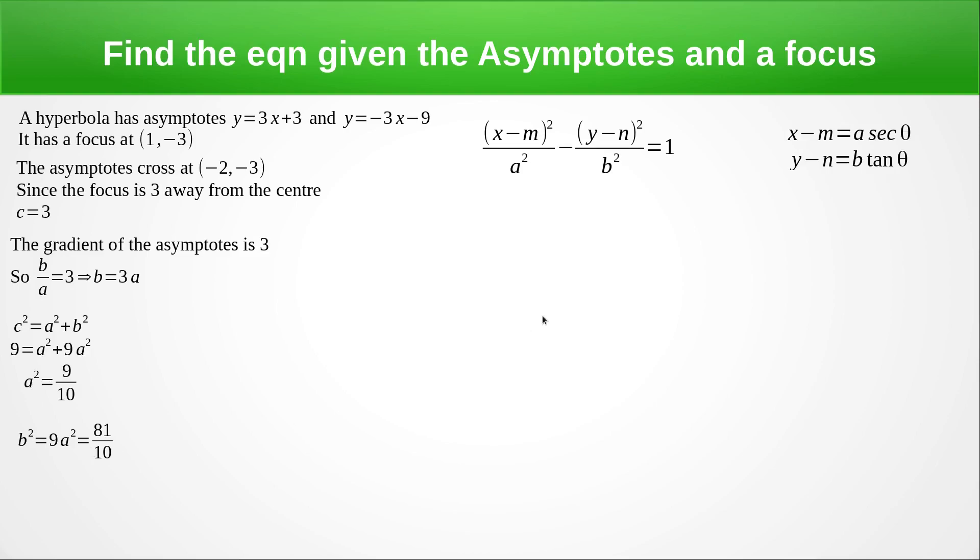So substituting a squared and b squared and m and n into this equation gives us this. And just remembering, dividing by 9 over 10 is the same as multiplying by 10 over 9. And substituting into here, and I'll let you do the extra manipulation, we get this equation in the parametric form.